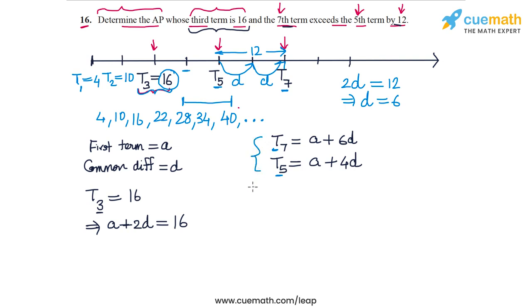So if we subtract these two relations, on the left side we get T₇ minus T₅, that's 12, and on the right side the A terms cancel out and we are left with 6D minus 4D, that's 2D. Once again we get D equal to 6.